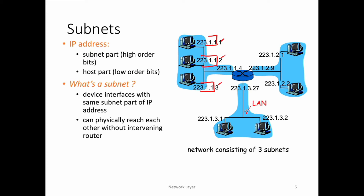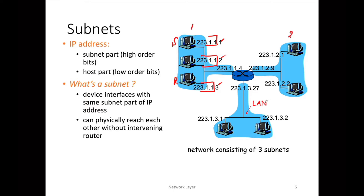Here we can identify a network involving a router where we have three subnets. A machine in one subnet can interact with another machine in the same subnet without involving the router. In the diagram we can see three subnets highlighted — so using subnets we can divide a larger network into smaller networks.